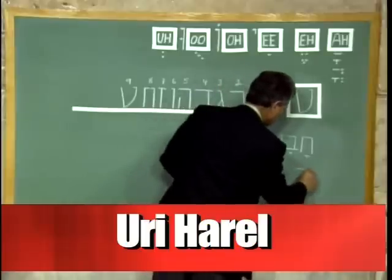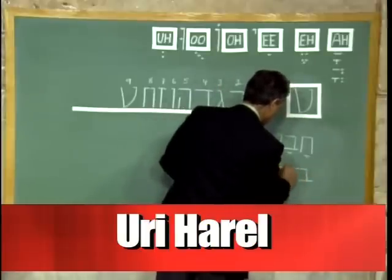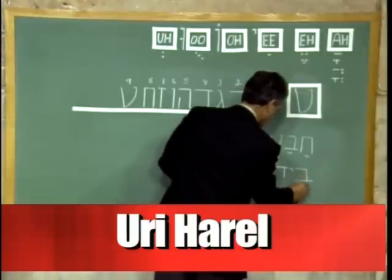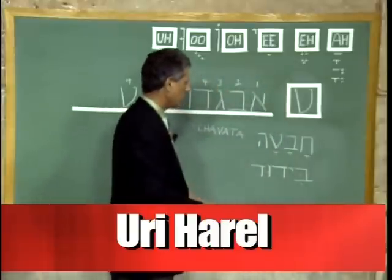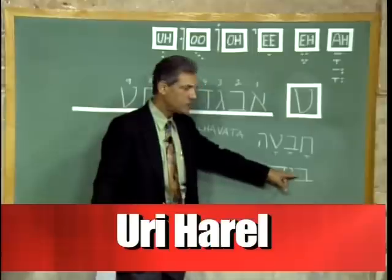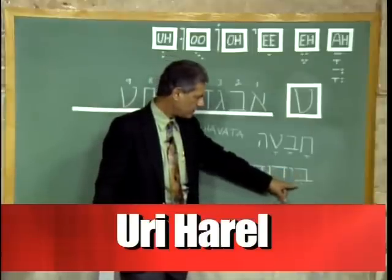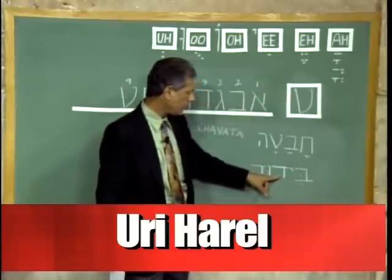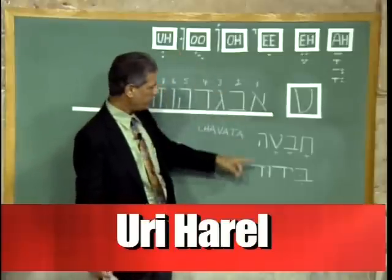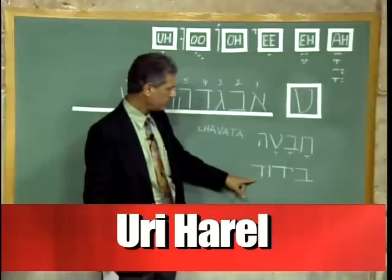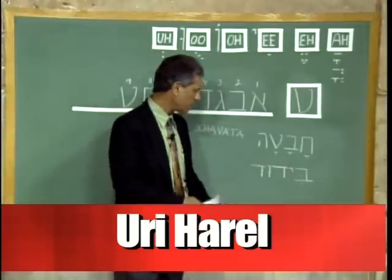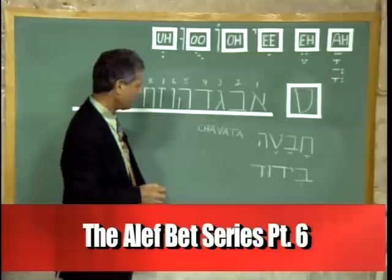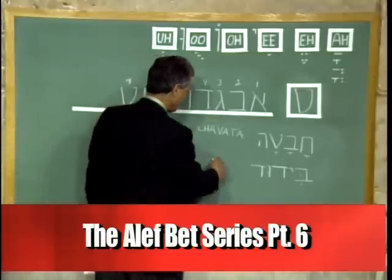Here is another word. Here is the Bet and a Yud — this is a real Bet because it has a dot in the middle, so it's a B sound with an E sound — B. Then we have a Dalet and a Vav and a dot in the middle — that's a U sound — B-Du — and another Dalet — B-Dud. That happens to mean insulation, but you don't have to remember that. It's just a way of learning how to read. Bdud.